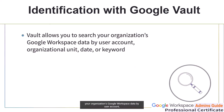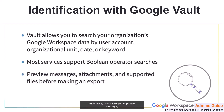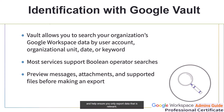With Vault, you can search your organization's Google Workspace data by user account, by organizational unit, by date or by keyword. Most services support Boolean operator searches, allowing you to easily identify relevant data for eDiscovery. Additionally, Vault allows you to preview messages, attachments and supported files before making an export, saving time and helping ensure you only export data that is relevant.